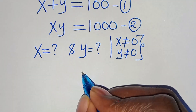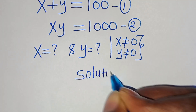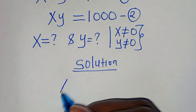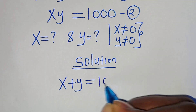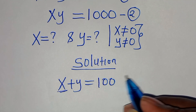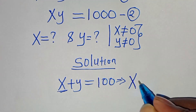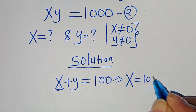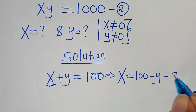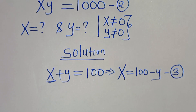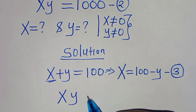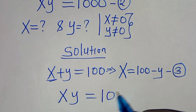So let's present a solution from here. Now from equation 1, which is x plus y equals 100, let's make x the subject of the formula, so that x is equal to 100 minus y. Let's call this equation 3. Now let's substitute equation 3 into equation 2, which is x times y equals 1000.